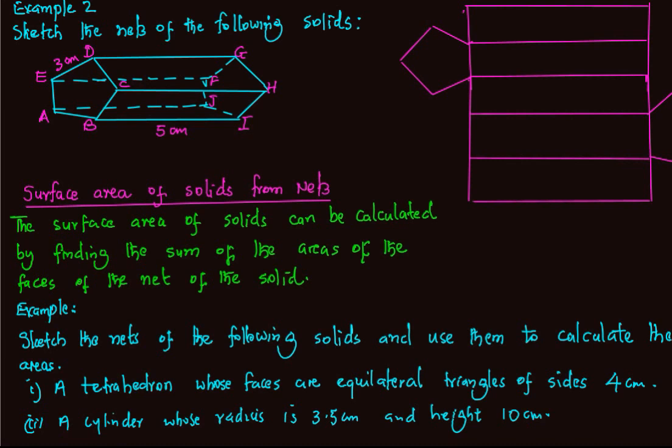In the second example, we have a pentagonal cross-section. We need to label the pentagonal cross-section so that we have A, B, C, D, and E.